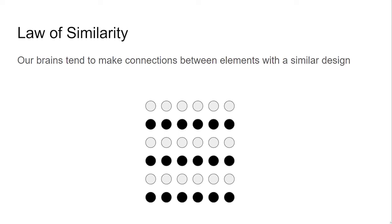There is the law of similarity. Our brains tend to make connections between elements with a similar design. In this case, we can perceive black dots or gray dots connected to one another and also separate from the other colored dots.